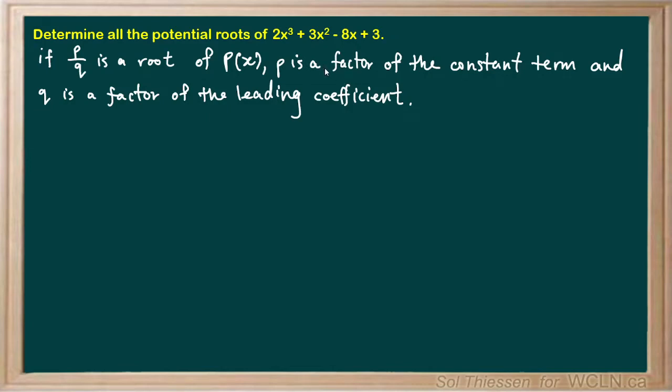Determine all the potential roots of 2x³ + 3x² - 8x + 3. To do this, we apply the rational zeros theorem, which tells us that if p/q is a root of P(x), where P(x) is a polynomial with integer coefficients, then p is a factor of the constant term and q is a factor of the leading coefficient.